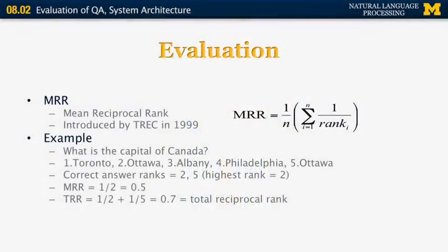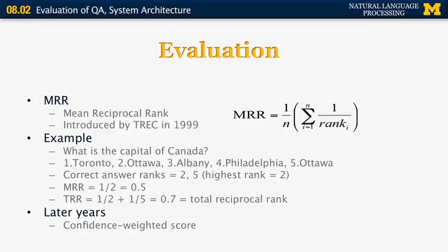In the TRR case, Ottawa appearing in both second and fifth place gives a TRR score of 0.5 plus 0.2 equals 0.7 points, and the maximum is larger than 1. In later years, a confidence-weighted score was prevalent. You got more points for a correct answer you were certain of, fewer points for a correct answer you weren't certain of, and you could lose a lot of points for giving high confidence to the wrong answer.